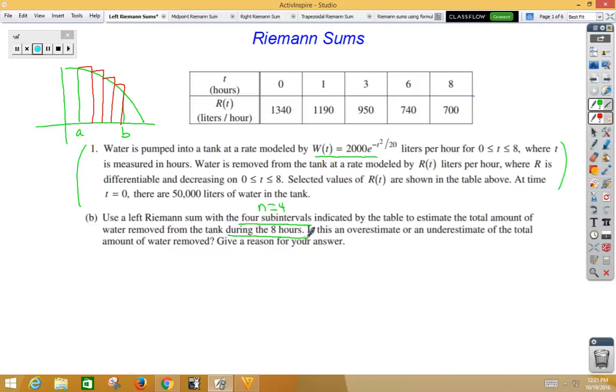With a left Riemann sum, we need to first look at what the numbers are skipping by in the top. From zero to one is skipping by one, one to three is skipping by two, three to six is skipping by three, and six to eight is skipping by two. Those numbers represent the length of the base, if we think of it as a picture. Now, our R of T, that's going to be the height. So, we've got base and height.